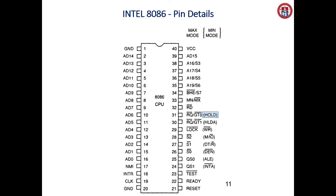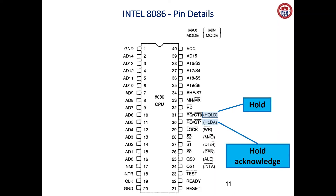The next pin is HOLD. These are all minimum mode signals: HOLD, HLDA (Hold Acknowledge), WRITE, memory and I/O, data transmit and receive, data enable, address latch enable, and interrupt acknowledge. The HOLD pin is used whenever a peripheral device wants to take control of the bus — it sends a hold signal, and the processor responds with a hold acknowledge signal.